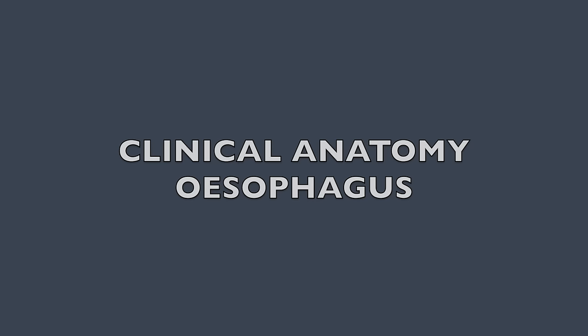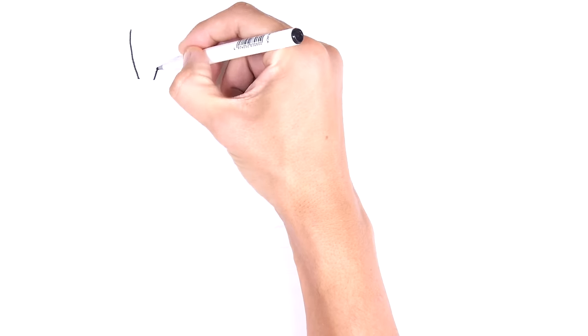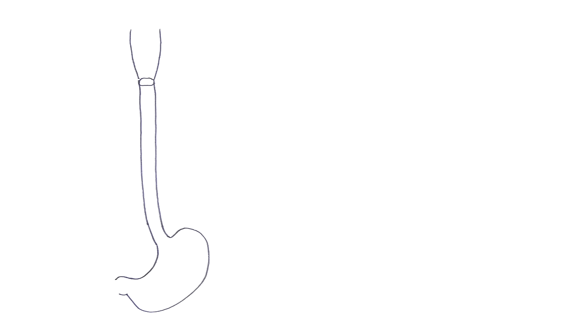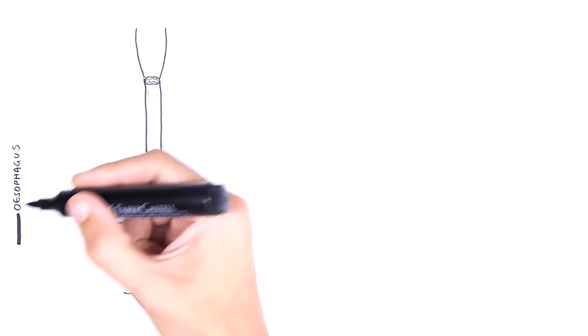Hello, in this video we are going to talk about the clinical anatomy of the esophagus. The adult human esophagus is an 18-25cm long muscular tube extending from the pharynx to the stomach.